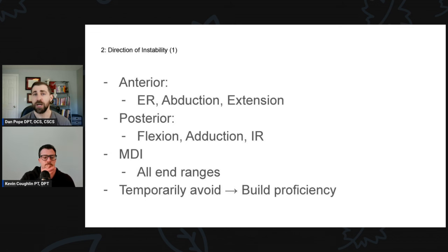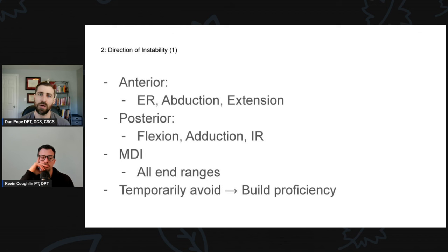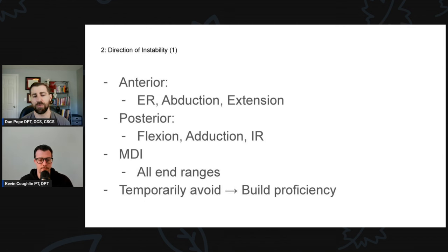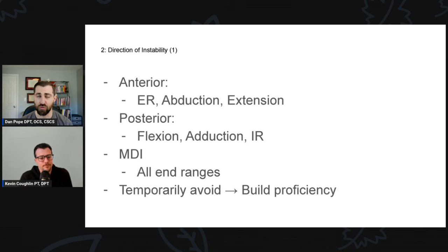For posterior instability, these folks have trouble with end-range flexion — which stresses the posterior and inferior capsule — internal rotation, and cross-body horizontal adduction. These are usually where people get hurt in the first place, so you have to protect them early and really strengthen in the end stages. For multi-directional instability, they're loose in many directions, so be careful with the provocative end ranges initially, and at the end of rehab get back to those positions — for example, if they want to snatch, they need to be really stable in end-range abduction and external rotation.